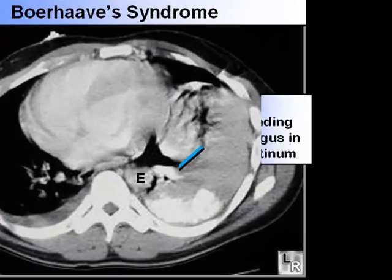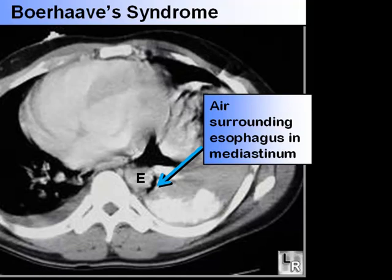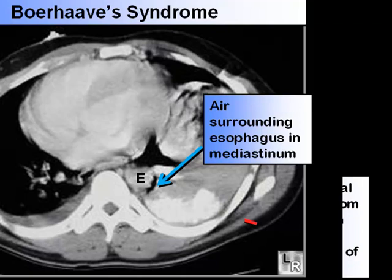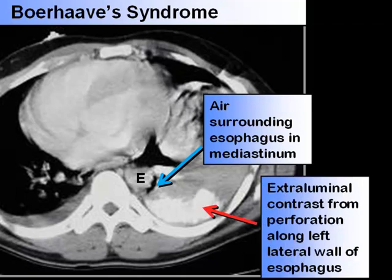In this CT scan of another patient, we can see air surrounding the esophagus in the mediastinum, and we can also see contrast which is extraluminal, due to the perforation that usually occurs along the posterior aspect of the left lateral wall of the esophagus.